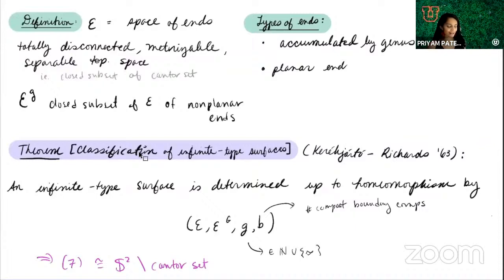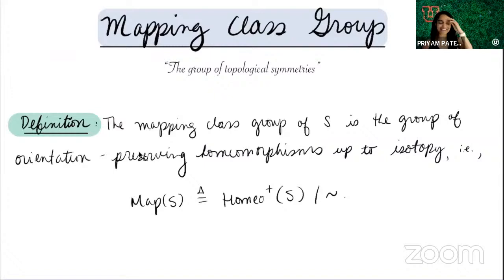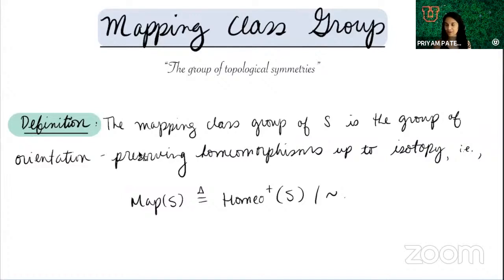My title says 'and their isometry groups,' but of course I'm going to mention the mapping class group. The mapping class group is the group of topological symmetries — specifically, the group of orientation-preserving homeomorphisms up to isotopy, which is the most natural equivalence relation in this setting. You do want to quotient out by isotopy so you don't distinguish between things that you shouldn't when thinking about symmetries of surfaces.